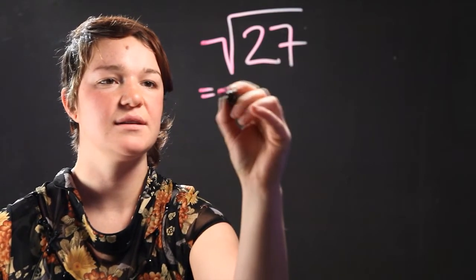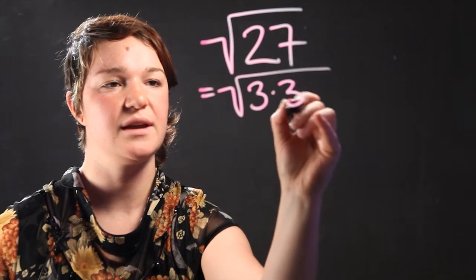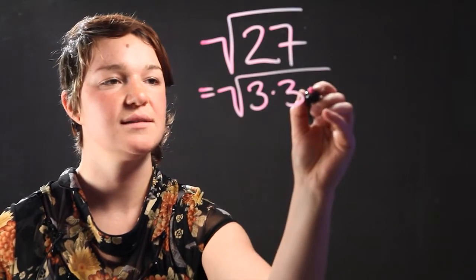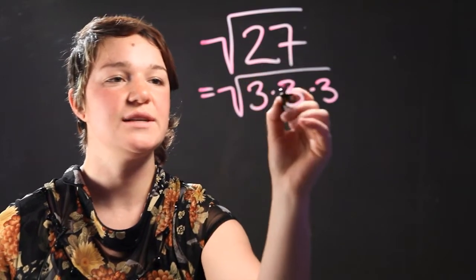So 27 is equal to 3 times 3, which is 9, times 3. So 27 is 3 times 3 times 3.